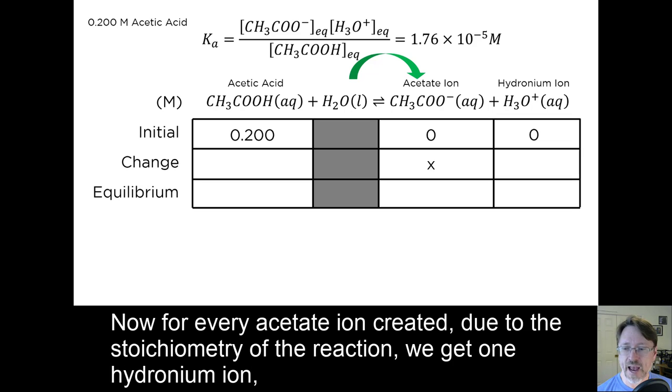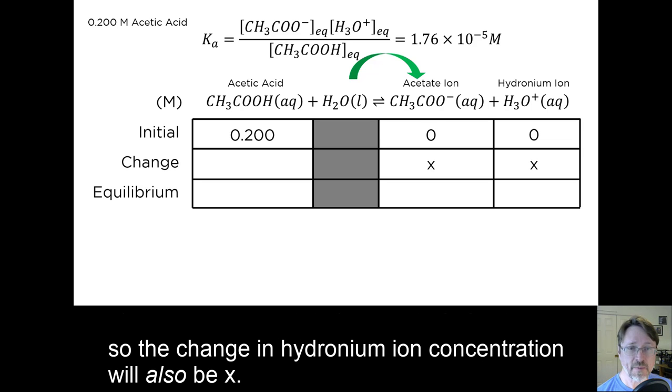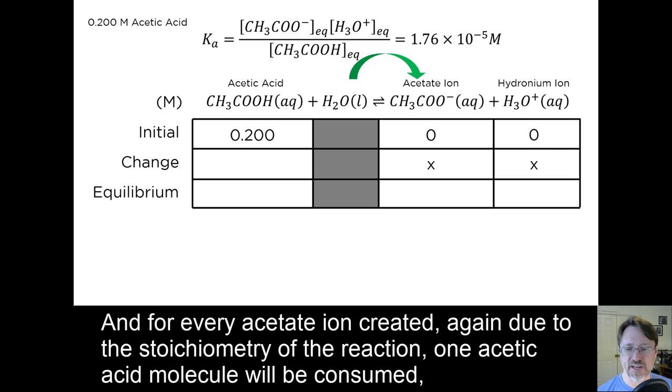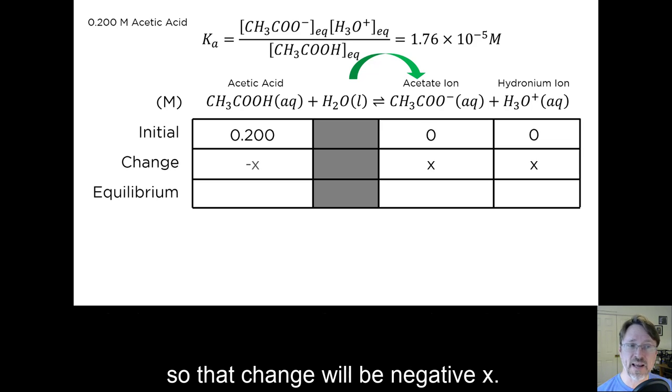Now for every acetate ion created, due to the stoichiometry of the reaction, we get one hydronium ion, so the change in hydronium ion concentration will also be x. And for every acetate ion created, again due to the stoichiometry of the reaction, one acetic acid molecule will be consumed, so that change will be negative x.